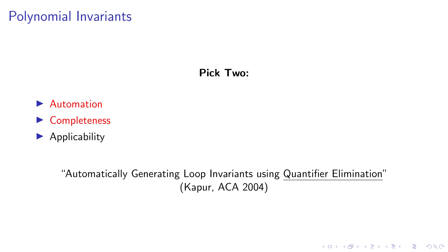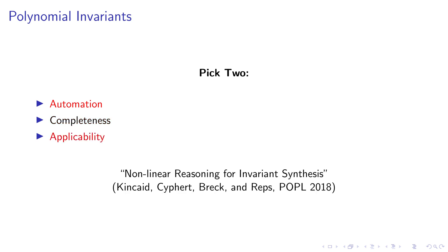If you choose automation and completeness, there is an approach due to Kapoor, published in 2004, that generates polynomial invariants using quantifier elimination. The problem is that quantifier elimination is very time consuming — it takes doubly exponential time, and it's not even applicable to programs with 10 lines of code. Another choice is to sacrifice completeness in order to gain applicability and speed. One of my favorites is from POPL 2018, called nonlinear reasoning for invariant synthesis. These approaches are really scalable and can handle real-world programs, but they can't provide any guarantee of completeness.